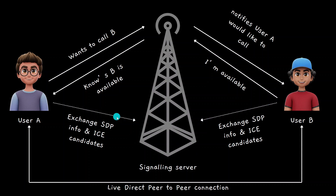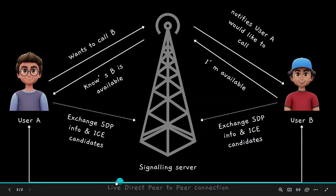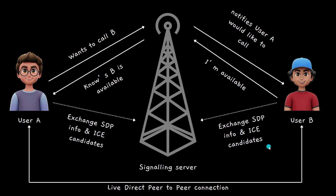They will then be exchanging that information again through the signaling server. After negotiation, these two browsers are going to confirm that they are now ready to connect. That's when User A and User B are going to be connected directly — what we call a live direct peer-to-peer connection — in which they will be able to share audio and video streams, and that is where our audio-video call will happen.